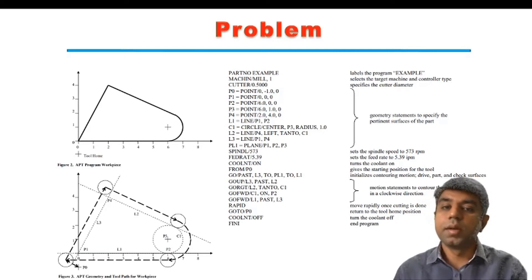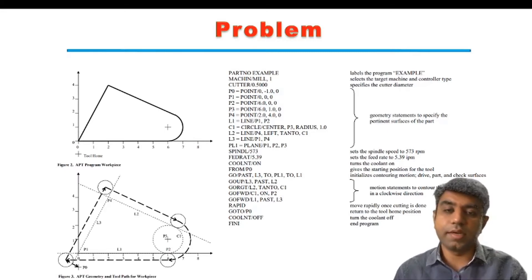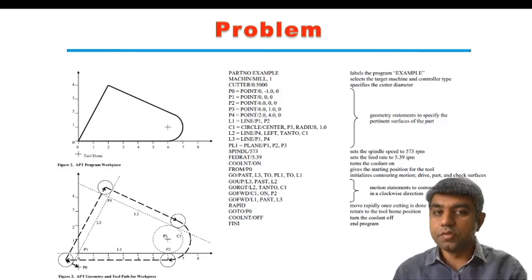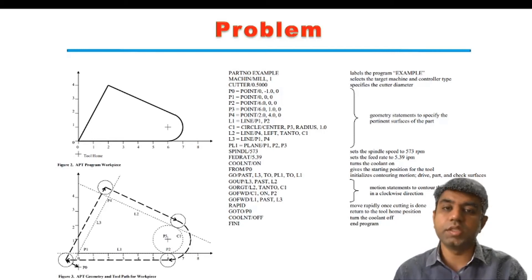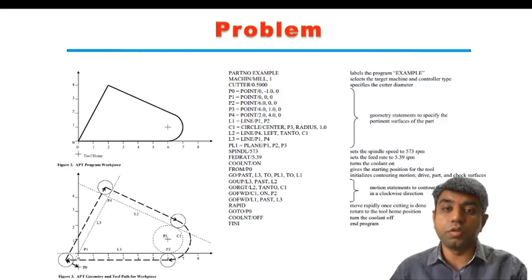This is the basic method to write a part program with APT language. In the Gujarat board, this question is very rarely asked, but understanding the concept clearly helps you appreciate that programming with APT is very easy because you do not need to remember different G and M-codes. That is all for today's lecture.